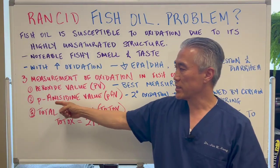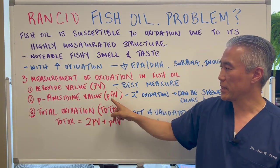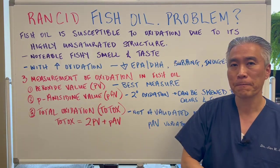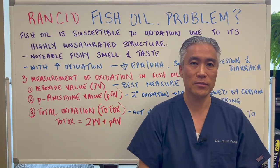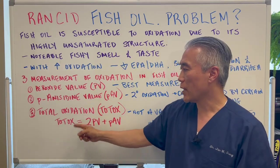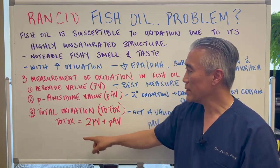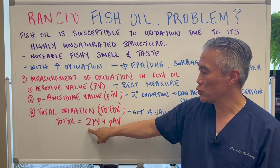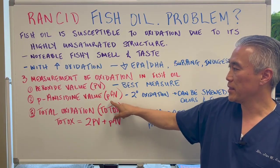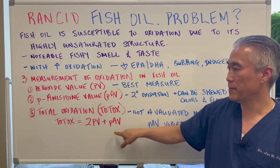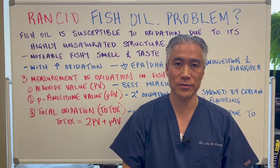The second one is p-anisidine value, or p-AV. And the third one is called total oxidation. Total oxidation is basically 2 times PV plus p-AV — that is the value of total oxidation.